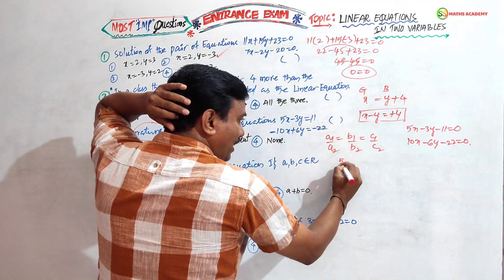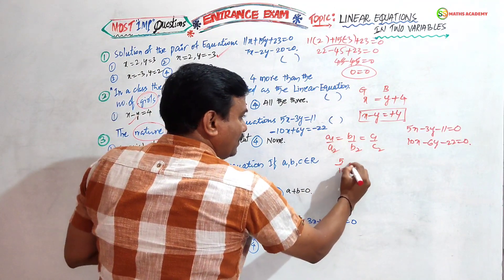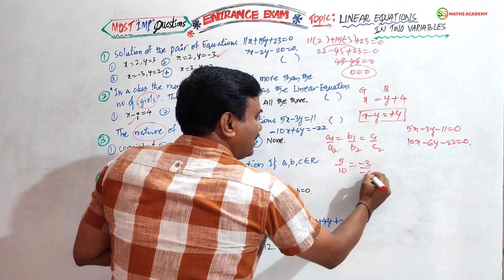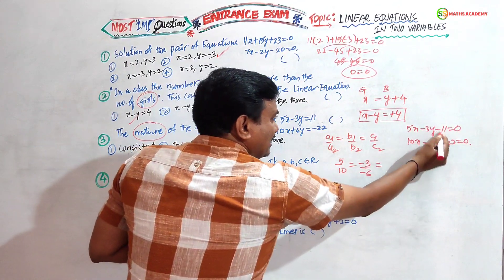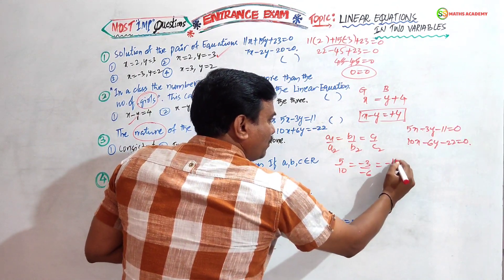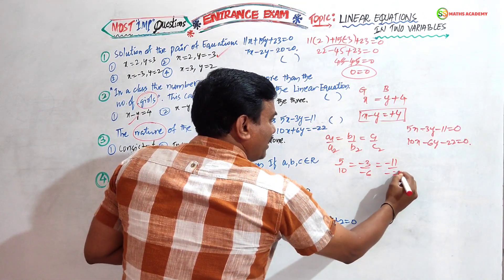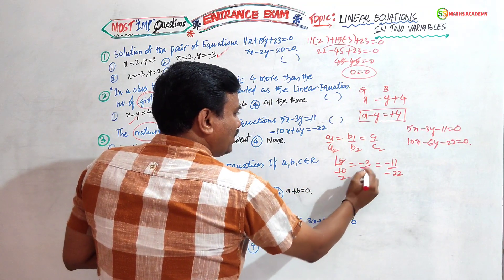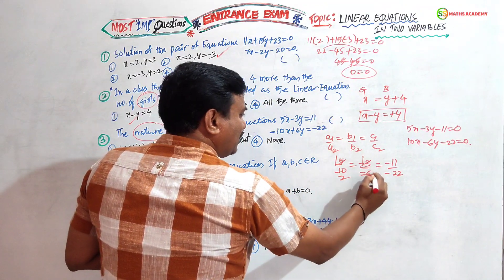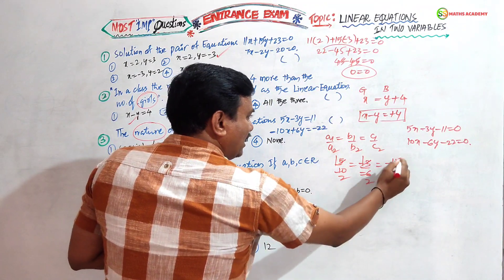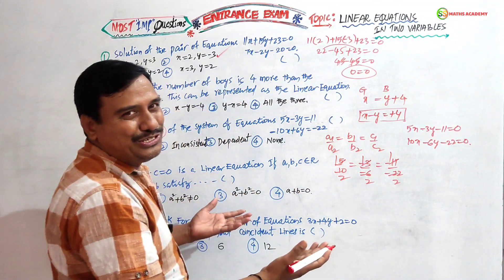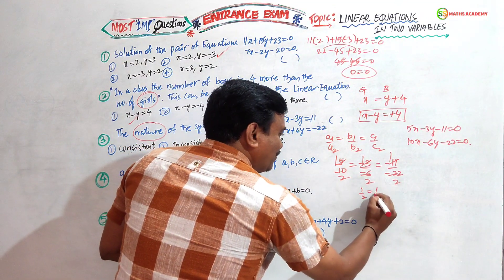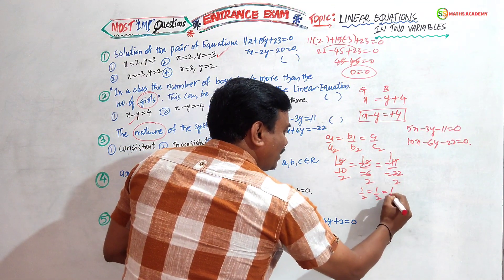Now we check: a₁/a₂ = 5/10, b₁/b₂ = −3/−6, c₁/c₂ = −11/−22. Simplifying: 5/10 = 1/2, −3/−6 = 1/2, −11/−22 = 1/2. So 1/2 = 1/2 = 1/2. All three ratios are equal — this is the third condition.